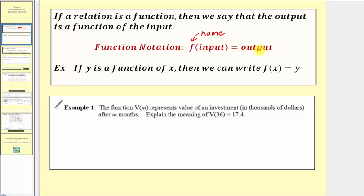As an additional example, if y is a function of x, where x is the input and y is the output, we can write f of x equals y. Using this notation lets us know y is a function of x, x is the input, y is the output, and the function name is f.